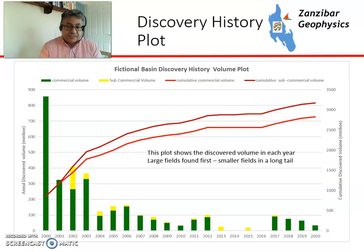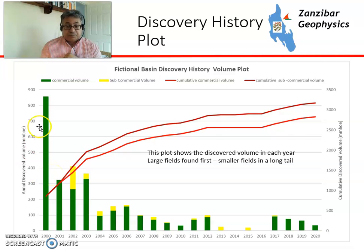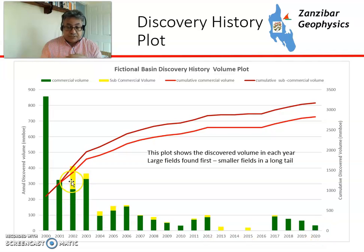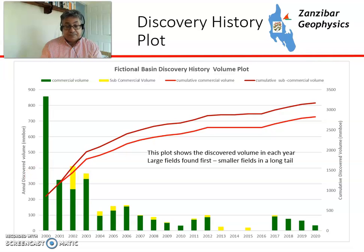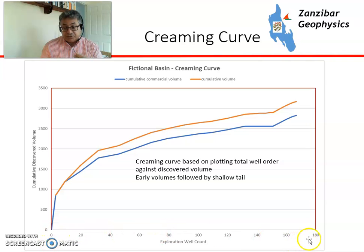This is a discovery history plot — it's a little bit like a creaming curve, only you've got year rather than well order, because some years you drill more wells than others. A lot of the volume was discovered in the first year, but you've had continual volume come through. Green is commercial volume and yellow is sub-commercial volume. In 2002 they drilled quite a few wells, but there were smaller fields than expected and therefore they were sub-commercial — nobody goes out to drill a sub-commercial well, but it doesn't always work out. Then this is the creaming curve of the basin, with about 170 wells drilled — quite a lot — and you can see there's still a little growth, particularly a late uptick with potentially a new play being discovered.